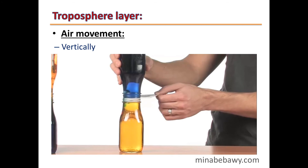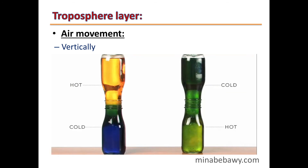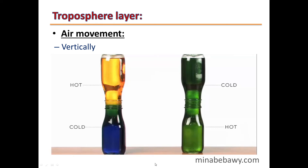Air movement in the Troposphere is vertical. Hot air moves upward while cold air falls downward. This is because the density of hot air is less than the density of cold air, so hot air rises while cold air sinks.